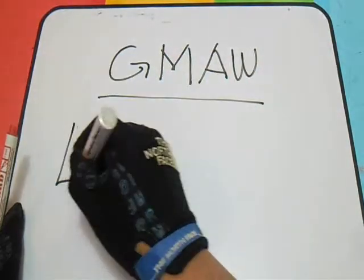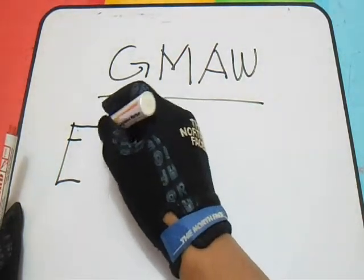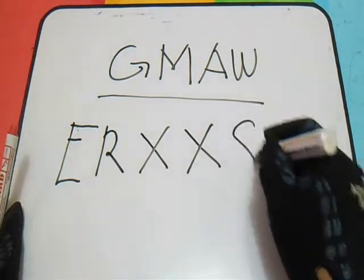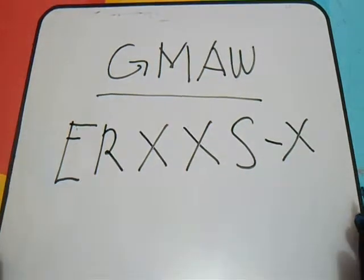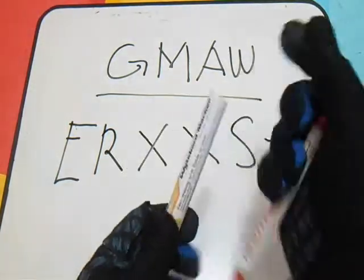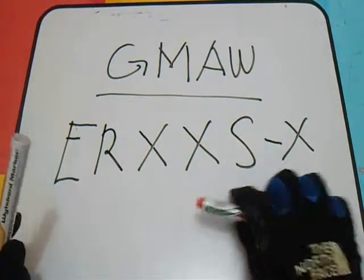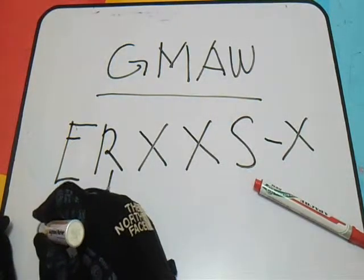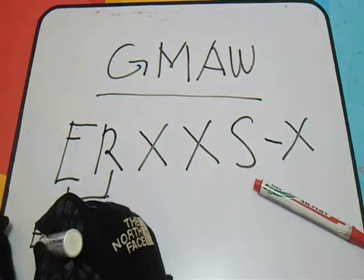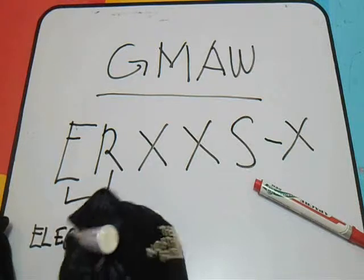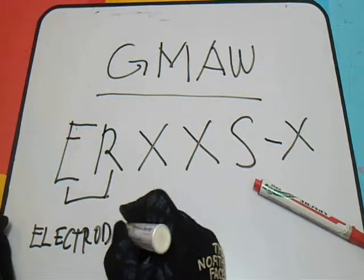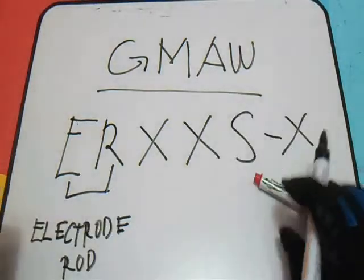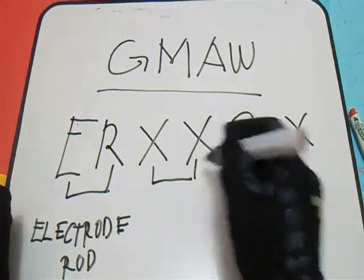We have the format: E-R, X-X, S, and X. This is the GMAW electrode identification system. First, what is ER? ER means electrode rod — this refers to the electrode.